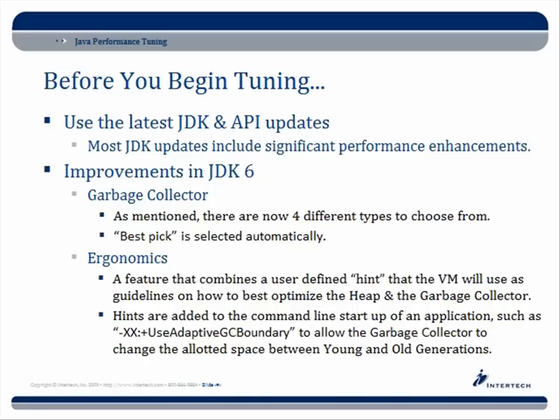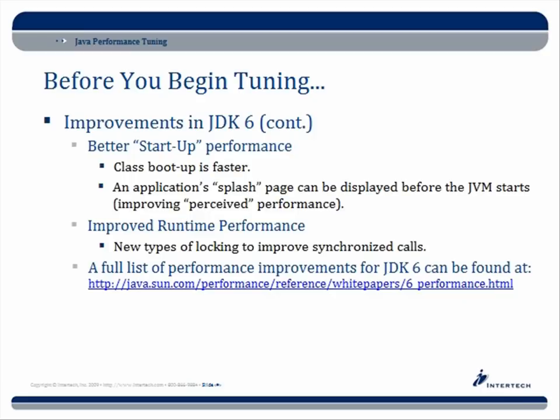Hints are added to the command line at startup of an application. I've got an example here: -XX:+UseAdaptiveGarbageCollectionBoundary. In this case, this one would allow the garbage collector to change the allotted space between young and old generations. You're not saying you want the young space to be a specific number of megabytes — you're simply saying you want it to be adaptive. It's a hint to the JVM.